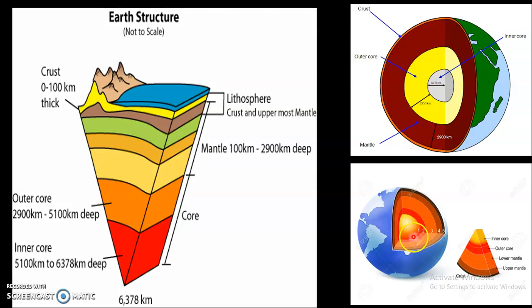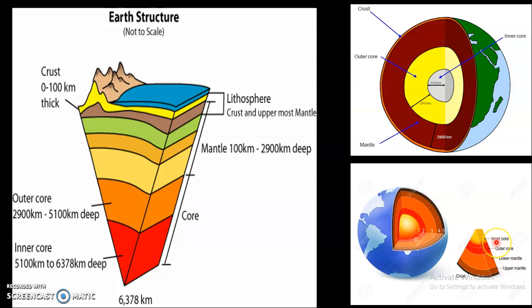In the third diagram we can see all three layers again divided into two parts. The mantle is divided into upper mantle and lower mantle, and the core is divided into outer core and inner core.